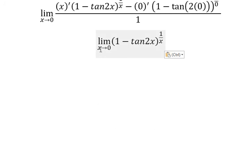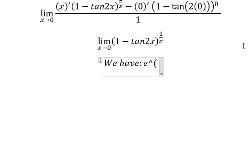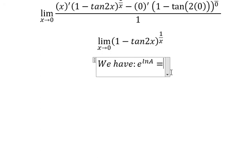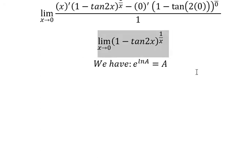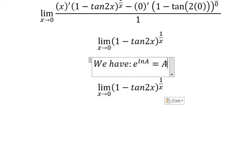Now I will show you how to find this limit. We have the formula here: e to the power of ln(A) equals A. We need to transform this expression using that identity.